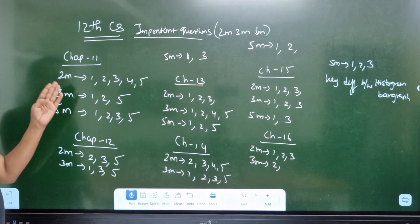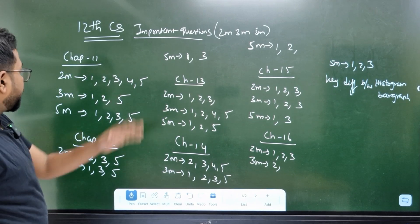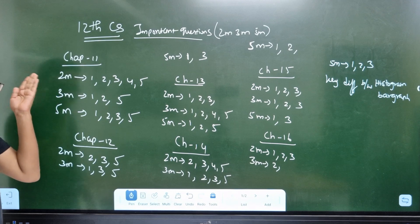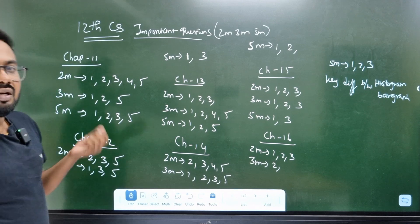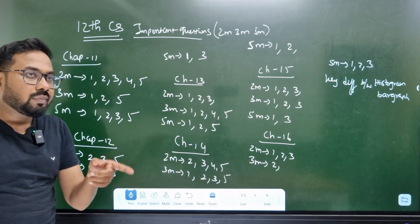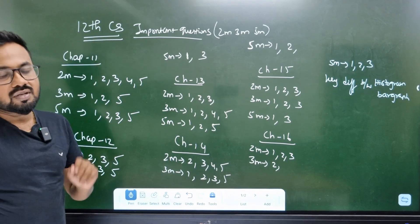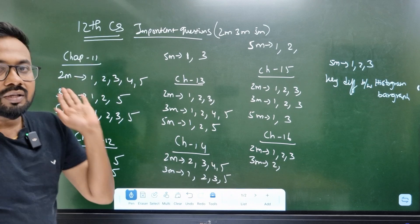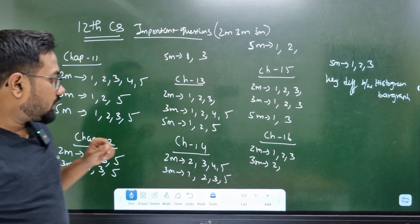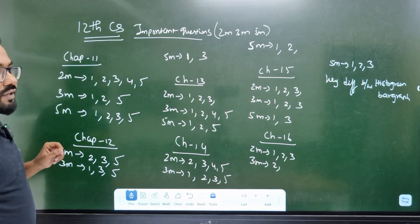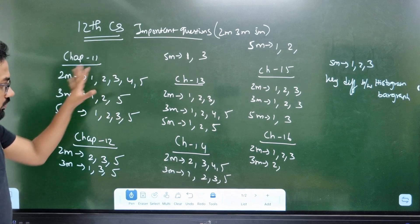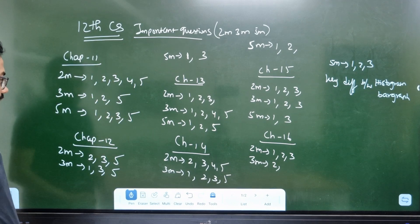Chapter 11 — 2 mark questions are 1, 2, 3, 4, 5. This 2-mark section is easy. This is a theory lesson, so 2 mark, 3 mark, and 5 mark are easy. One question is RDBMS and DBMS — it is the same. That is about DBMS. What does this pattern just need to know?